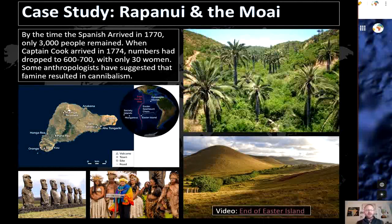By the time the Spanish arrived in 1770, only 3,000 people remained. When Captain Cook arrived in 1774, numbers had dropped to between 600 to 700 people, with only 30 women. Some anthropologists have suggested famine resulted in cannibalism. Others have claimed the island was once covered in large palm trees and thick forests, but has since succumbed to mass deforestation. Today, Rapa Nui is home to about 7,750 people and is a major tourist destination. Let's watch a quick clip from National Geographic titled End of Easter Island.